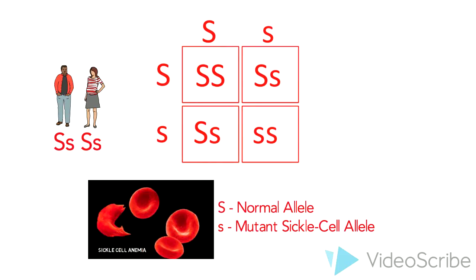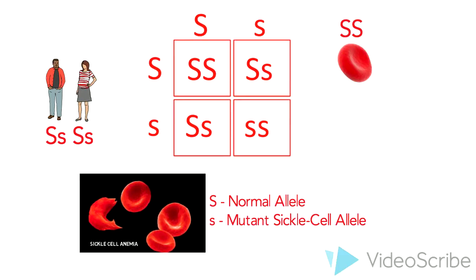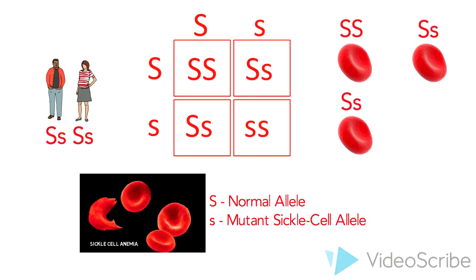The Punnett square will look something like this. Any genotype with normal dominant allele, big S, will present a normal phenotype even if it is a carrier of the mutant allele. Remember, sickle cell anemia is an autosomal recessive disorder. Therefore, affected offspring are those who inherit the two mutant alleles, little s and little s.